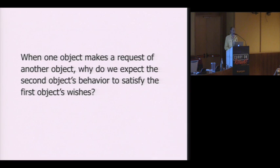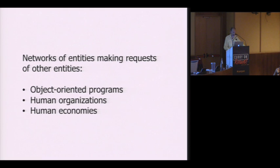We motivate the whole talk with this question: when one object makes a request of another object, why do we expect the second object's behavior to satisfy the first object's wishes? We're not the only field in which such questions are relevant. Many complex systems can be characterized as consisting largely of networks of entities making requests of other entities — not just object-oriented programs but also human organizations and human economies.